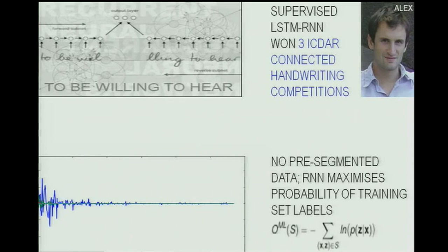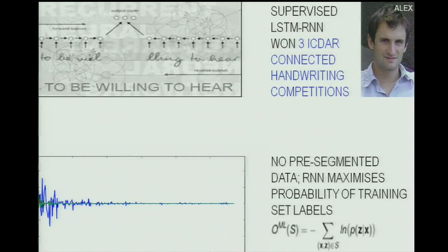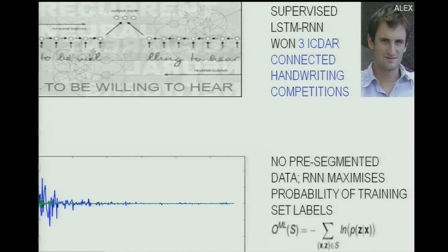In connected handwriting, somebody scribbles something and you are supposed to translate it into plain text — a rather short label sequence from a long real-valued input sequence of pixels observed sequentially. You need a recurrent network, and preferably a long short-term memory network that can deal with long delays between relevant events. Alex Graves, my former PhD student, used this approach with connectionist temporal classification, which maximizes the probability of label sequences given long real-valued input sequences without pre-segmentation. He won the French, Farsi, and Arabic connected handwriting recognition competitions without speaking a word of Arabic.